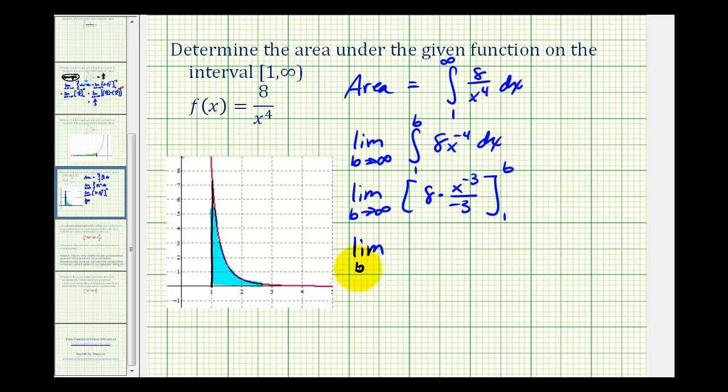Let's clean this up. We have the limit as b approaches infinity. This is going to be negative eight thirds. And then we'll have x to the third in the denominator.